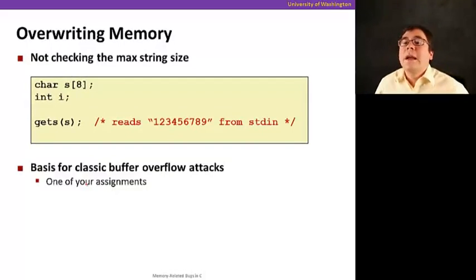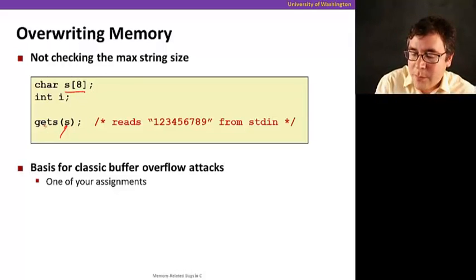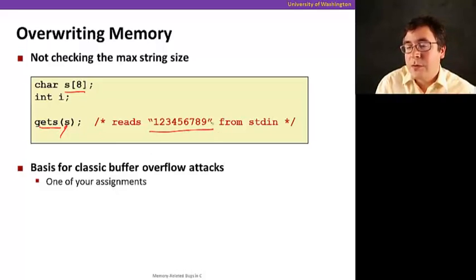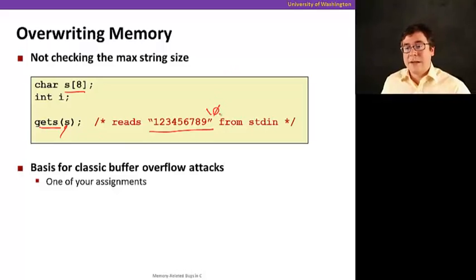Now, the other problem is not checking the size of a string before you write it. So here's an example, you have, you declare an array of 8 bytes in your stack. And then you pass it as a parameter to gets, and then you go and read the string that goes 1, 2, 3, 4, 5, 6, 7, 8, 9. And we're going to have one extra byte here.